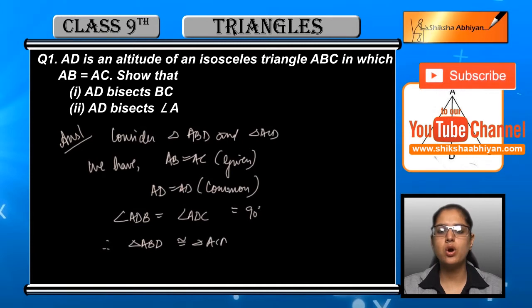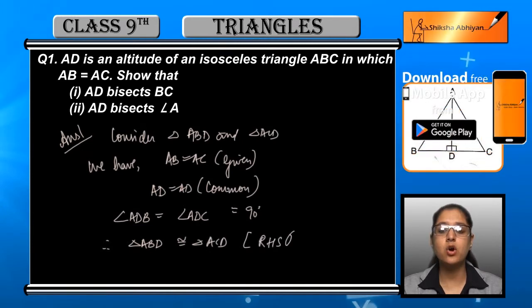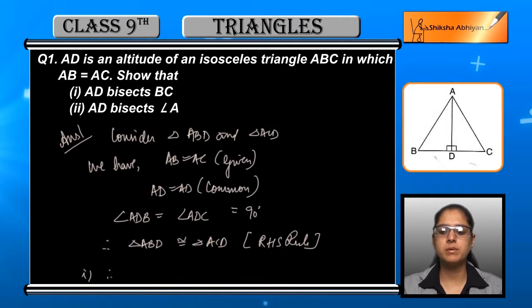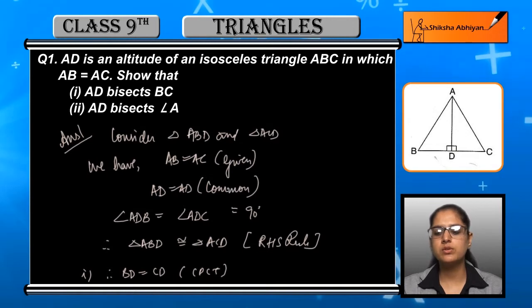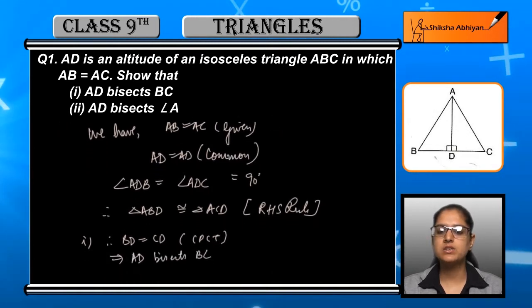Because AD is an altitude, so altitude is 90 degrees, they are equal to 90 degrees. Ultimately we have triangle ABD is congruent to triangle ACD, and this is by the RHS congruent rule, that is right hypotenuse side rule.